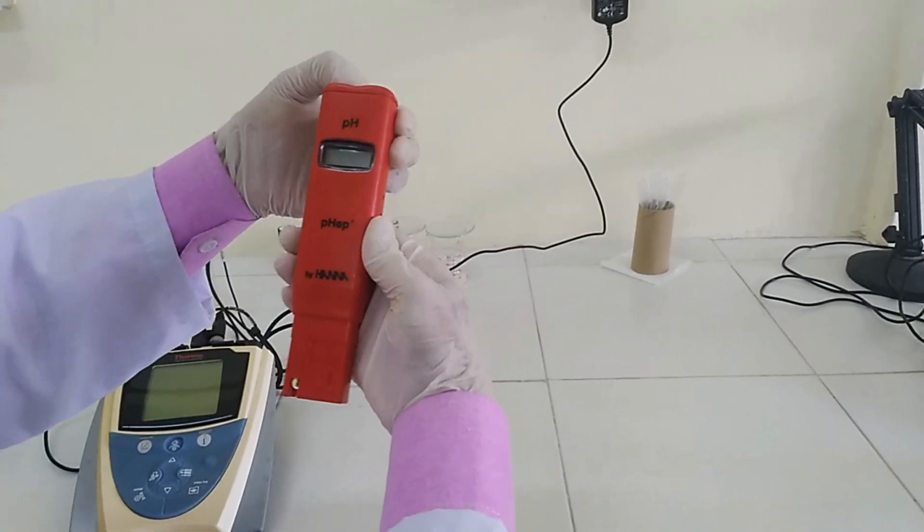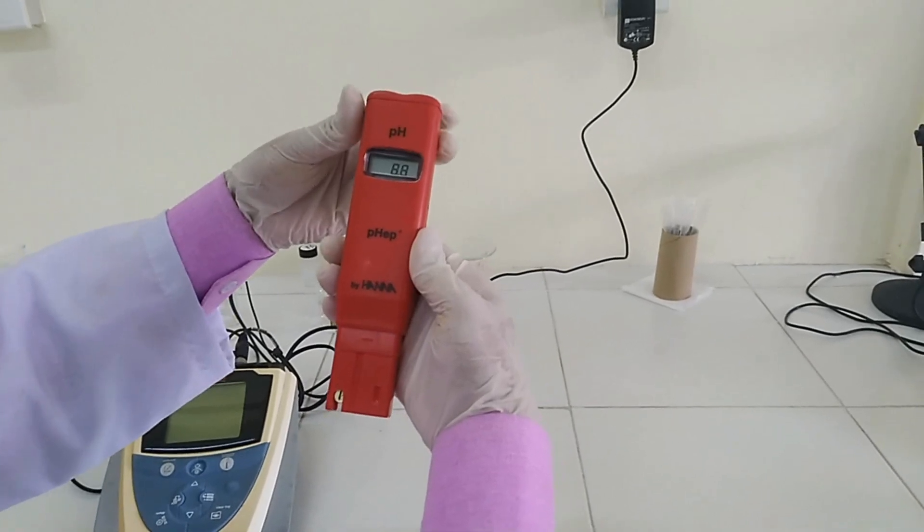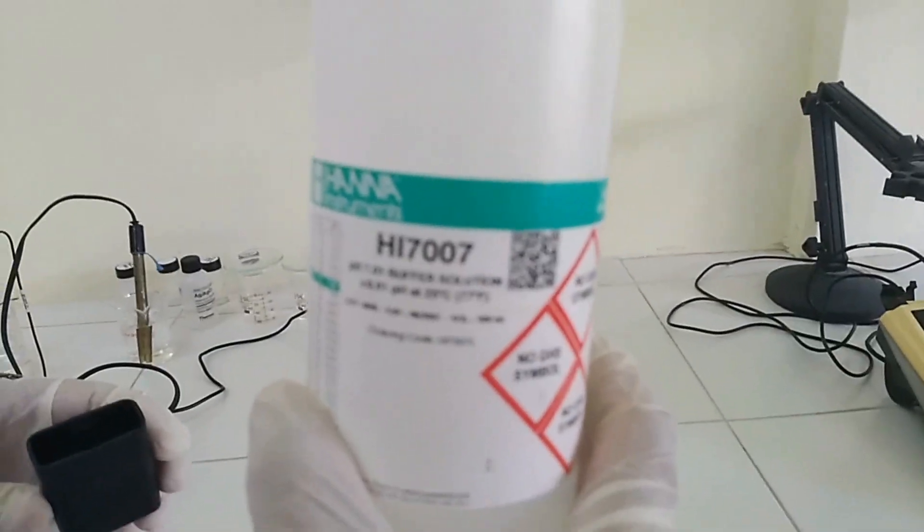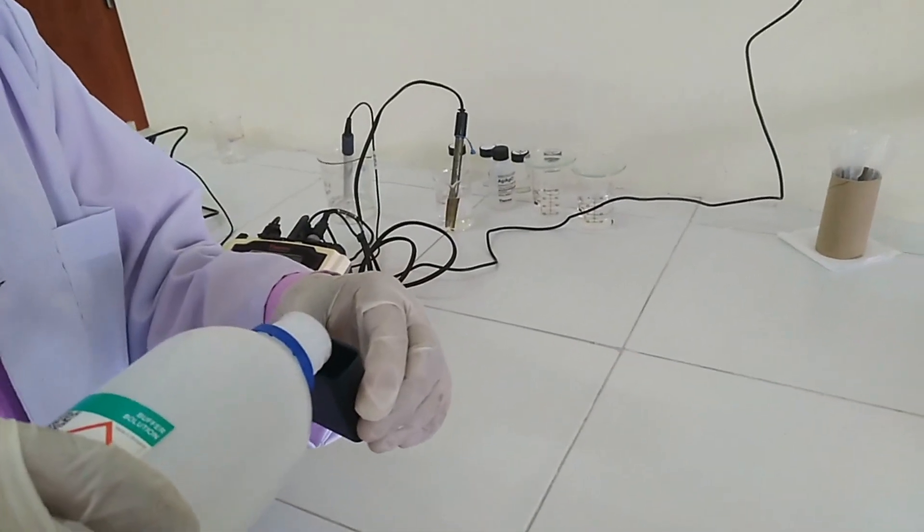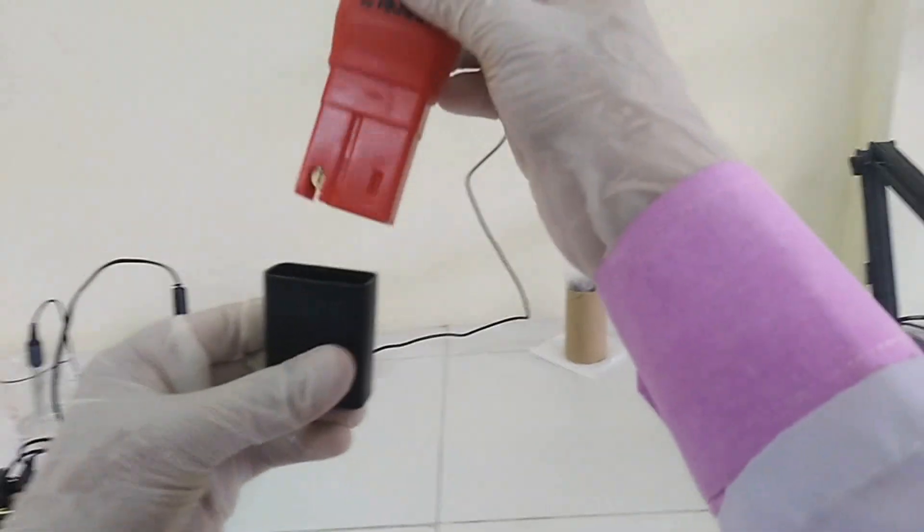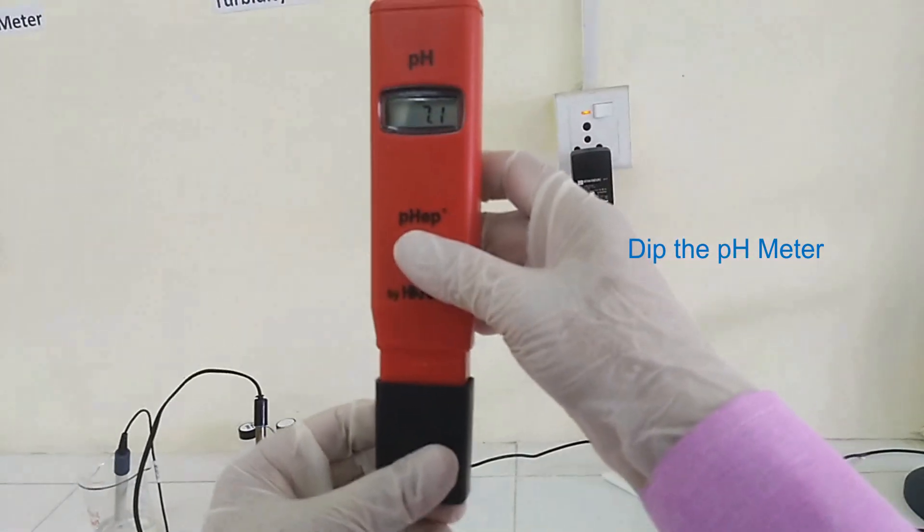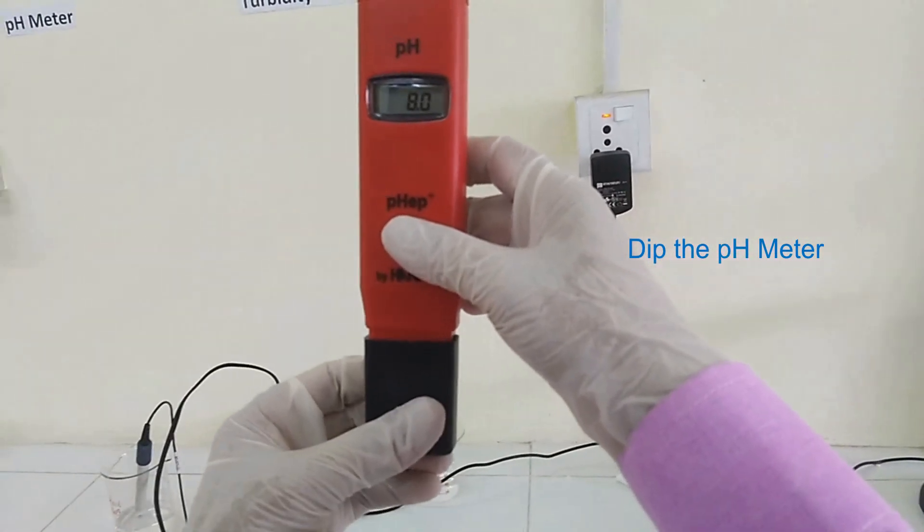Now switch on the instrument. Take buffer solution of pH 7.01 in cap and dip the pH meter.